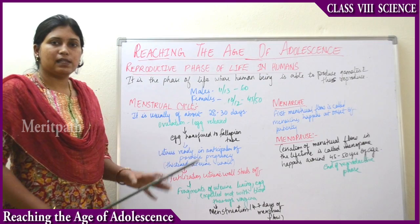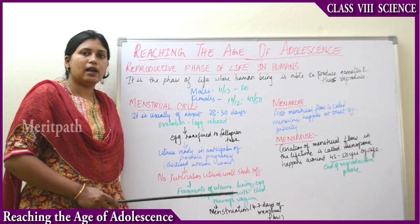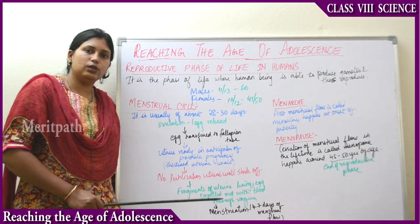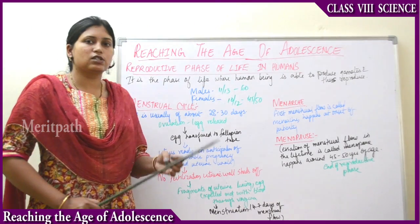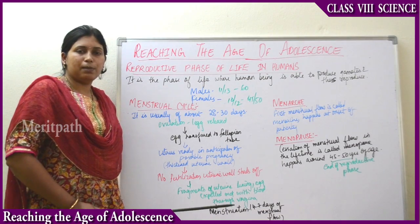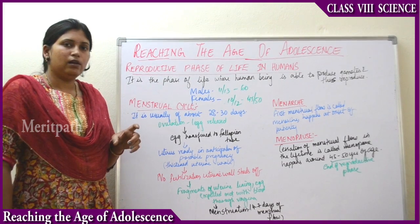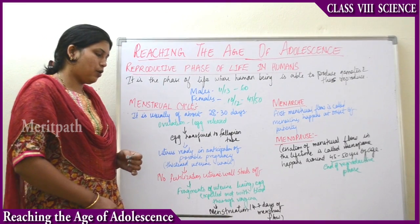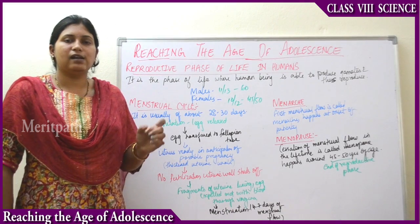The fragments of the broken thickened uterine wall, along with the unfertilized egg, expel out of the uterus along with blood through the vagina. This process is known as menstruation. Menstruation usually lasts four to seven days. So the unfertilized egg, along with the thickened uterine wall and some blood, comes out as fragments shed from the vagina — this process is known as menstruation, and it occurs four to seven days every month as the menstrual flow.